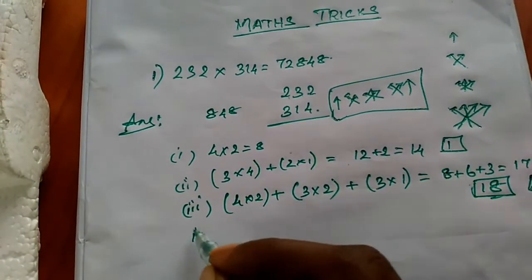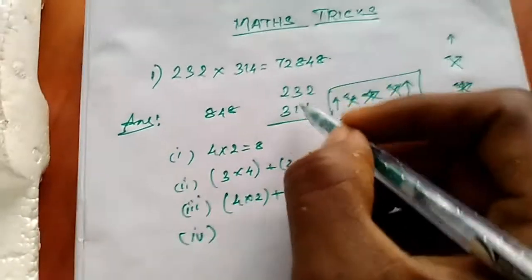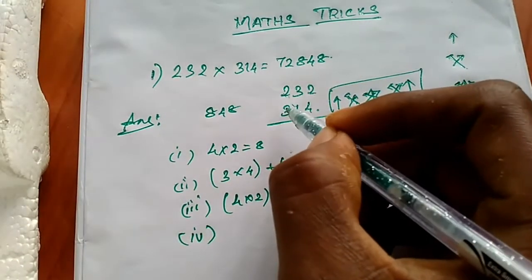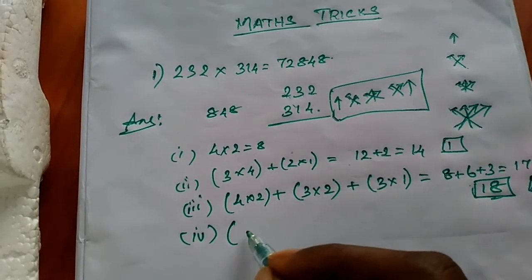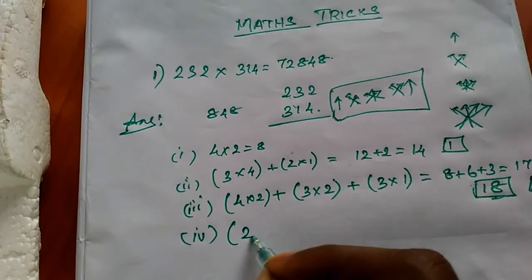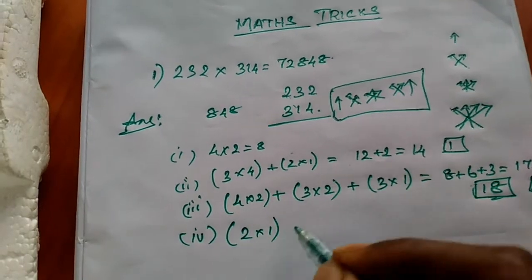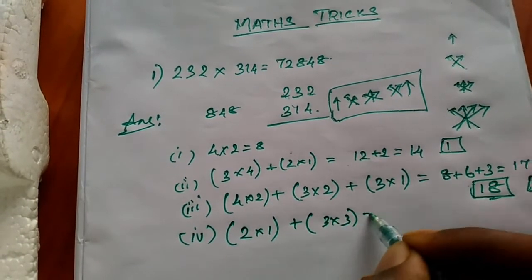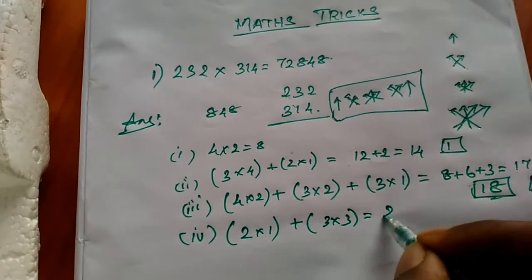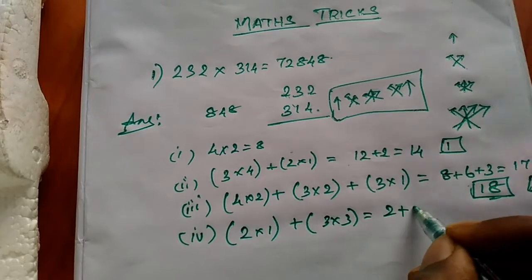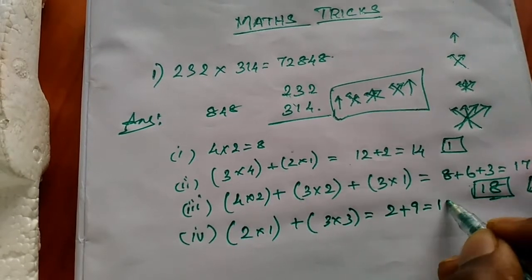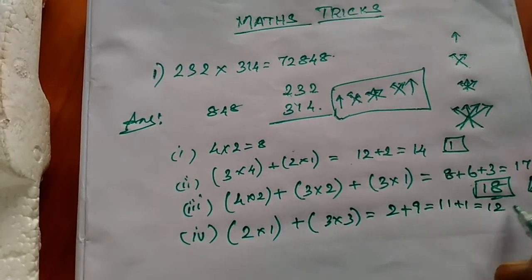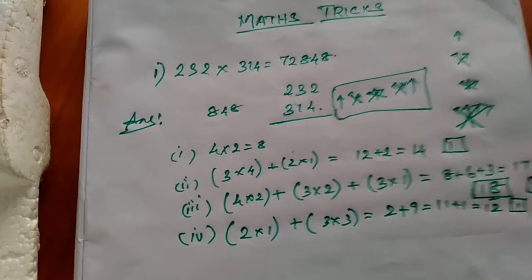Step four, next two cross two: 2 into 1 plus 3 into 3 equals 2 plus 9 equals 11, plus carry 1 equals 12. Write 2, carry 1.